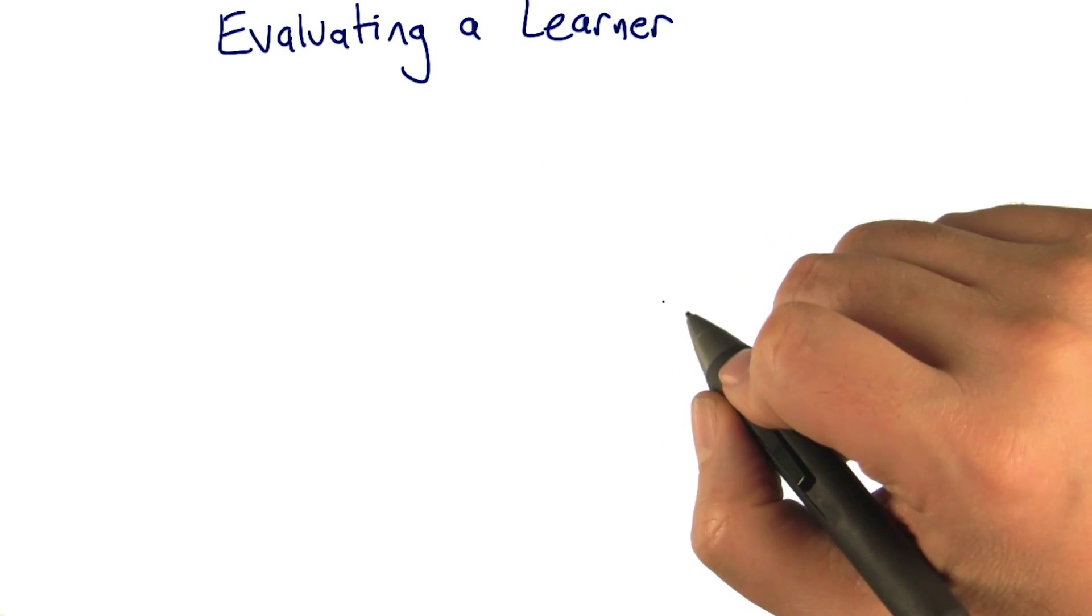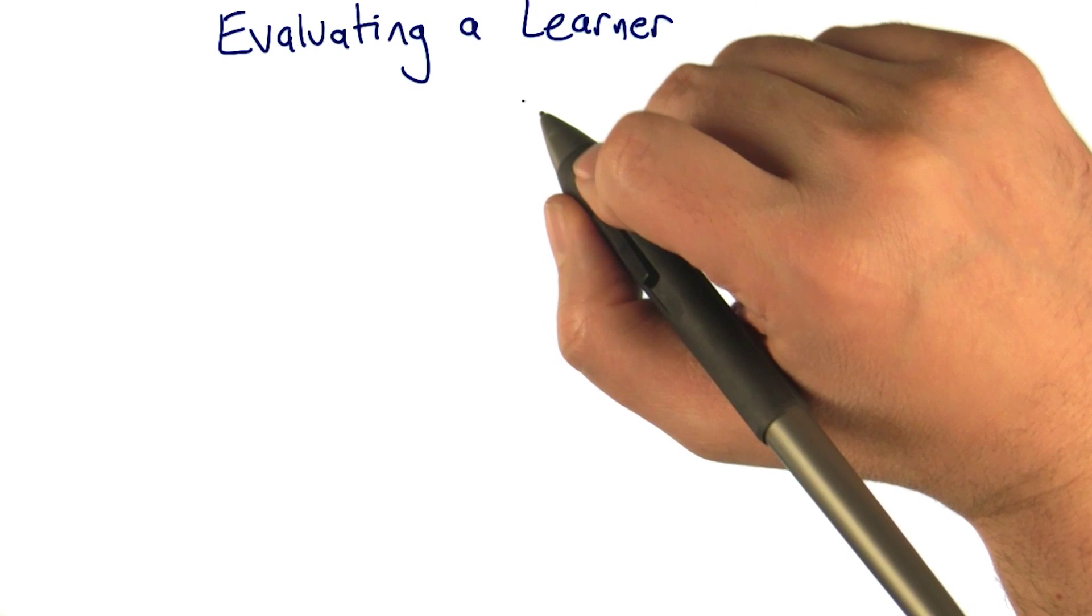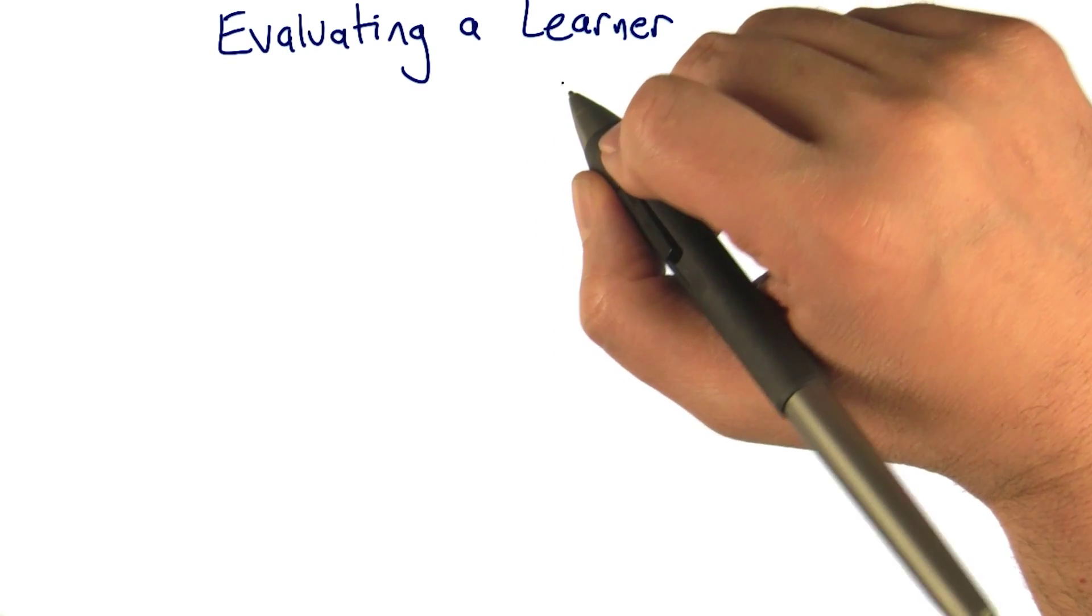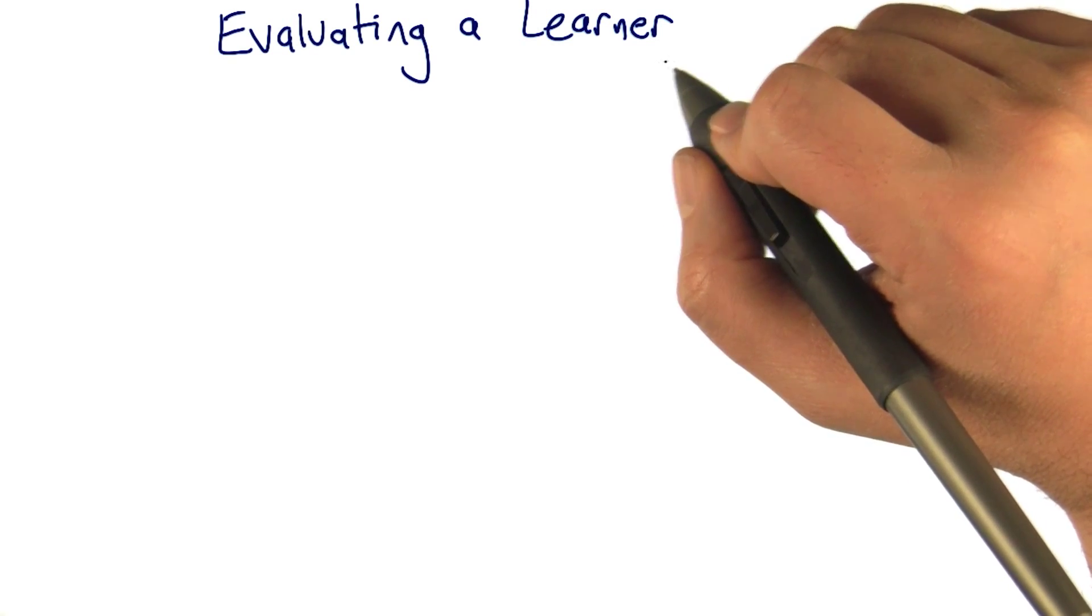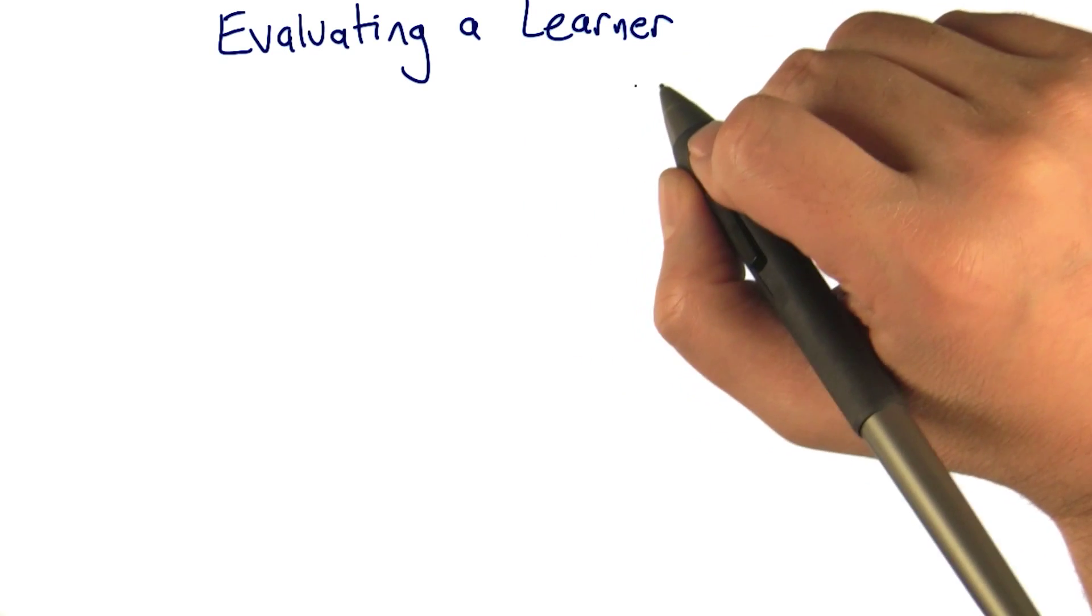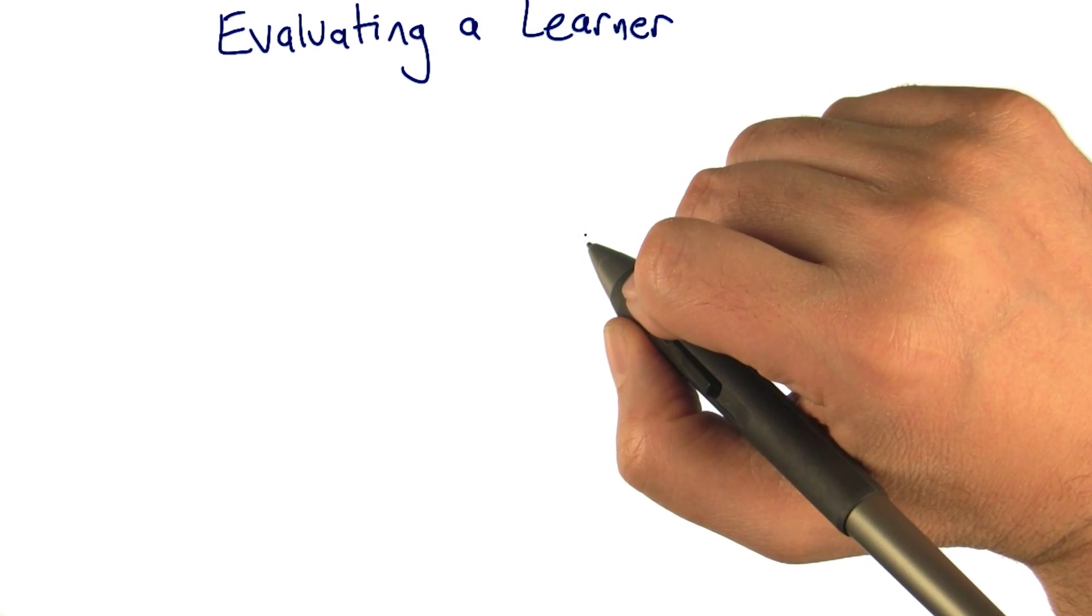So at this philosophical level, there's one last thing I want to talk about. We just talked about evaluating a policy, but remember, in the reinforcement learning setting, the policy is what gets output as a result of the learning process. So what if we want to actually evaluate the learner? How good is this learner? Can you think of some ways that we might be able to decide how good a learner is?